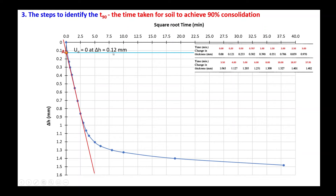Knowing that the final change in thickness, delta h final, is 1.482 mm, draw a horizontal line passing through this point. This horizontal line represents the final change in thickness.